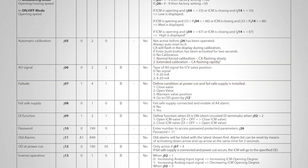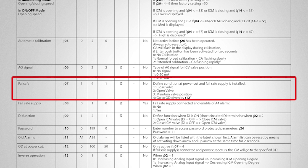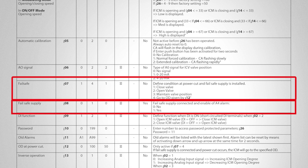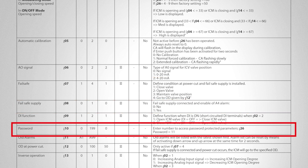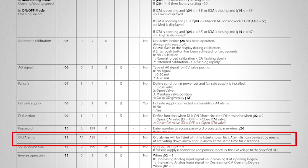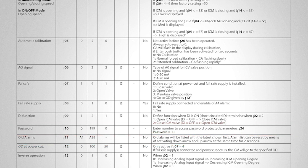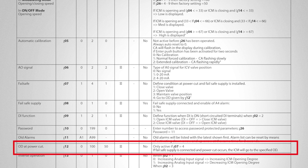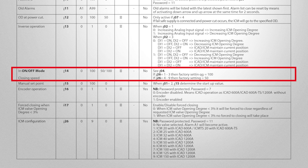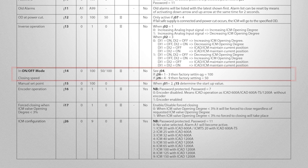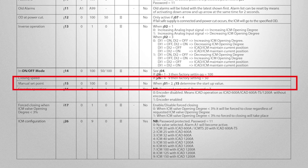If a UPS is used, the failsafe parameter IO7 and the failsafe supply parameter IO8 can be used. A password can be entered at parameter i10. Old alarms can be viewed at parameter i11. Again, if the UPS is used, the opening diameter when power is lost can be set at i12. The operation of the iCAD can be reversed with i13. If the iCAD is set in on/off mode, i14 can be used to adjust the speed. If you decide to use the iCAD in manual mode, i15 can be used to set the startup parameter for the iCAD.